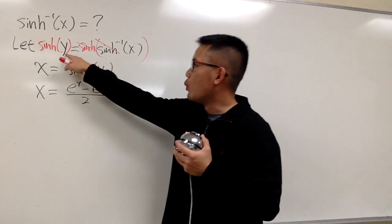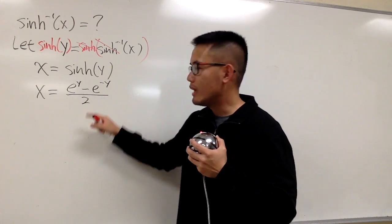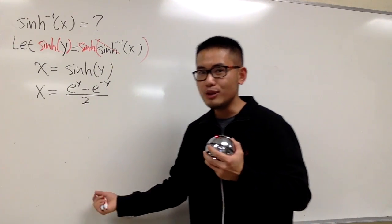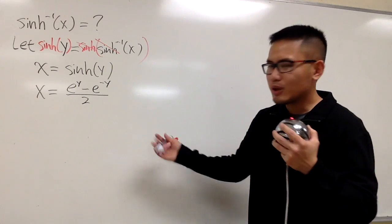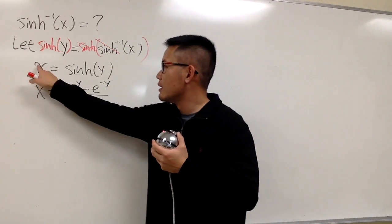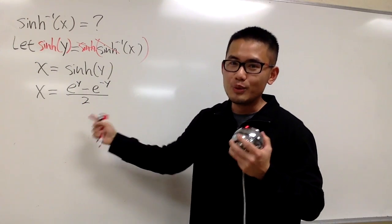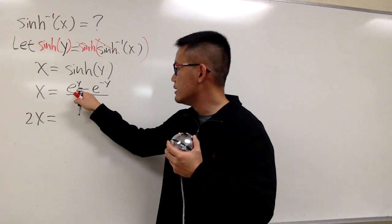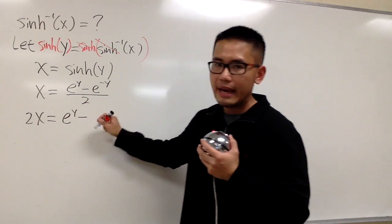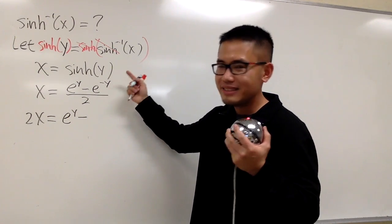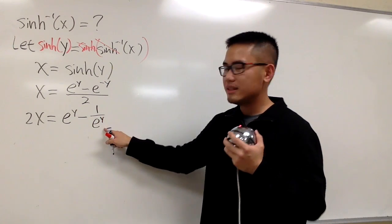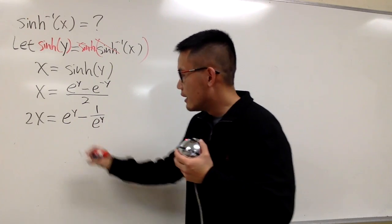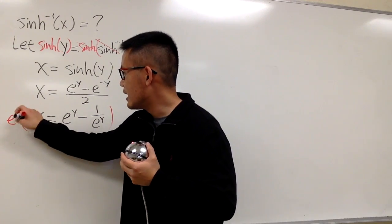Earlier we said y is equal to the inverse sinh x, and we have the y right here. If somehow we can solve for y, that will be an expression for the inverse sinh x. This is an equation with a fraction, so let's multiply both sides by 2: we get 2x equals e to the y minus e to the negative y. E to the negative y is the same as 1 over e to the y, so this is still an equation with a fraction. Let's multiply everything by e to the y.